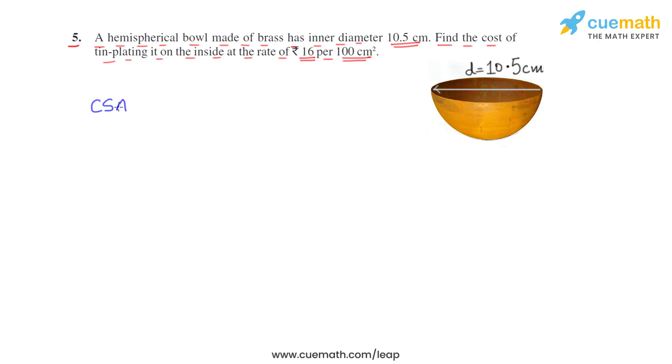The curved surface area is 2πr², but we need r for this. They have given the diameter is 10.5 centimeters, so firstly we will find r, which is half of it. So 10.5 divided by 2 equals 5.25 centimeters. This is the radius.